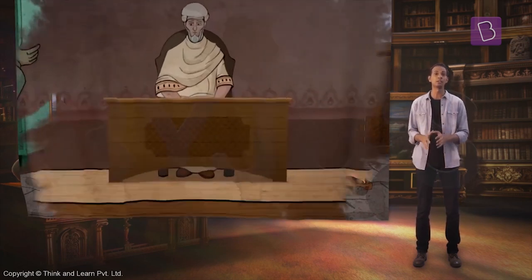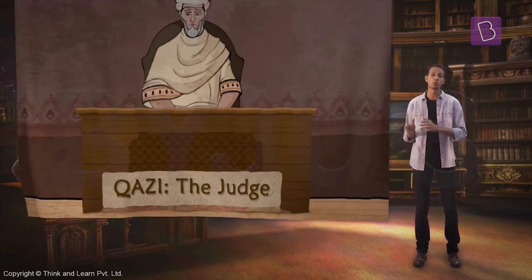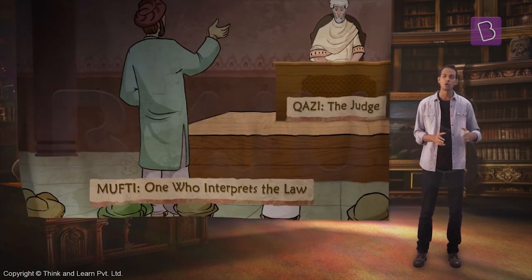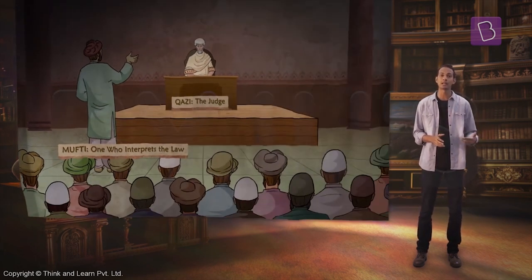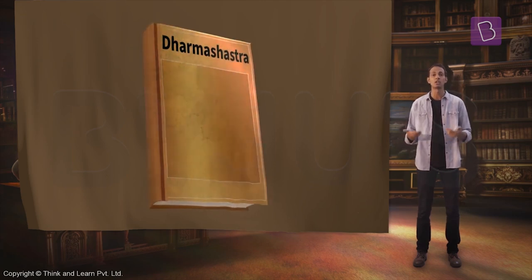The criminal courts still had a Kazi, who was a judge, and a Mufti, who would interpret the law. One of the main issues faced by the British was that the pundits all understood the law differently based on their own interpretations of the Dharma Shastras.